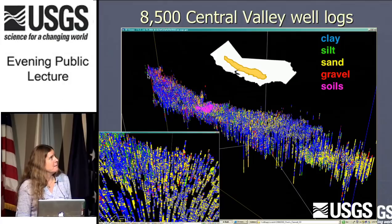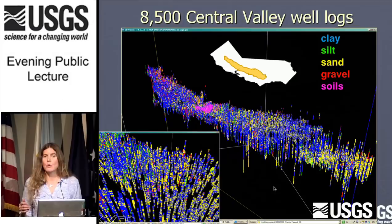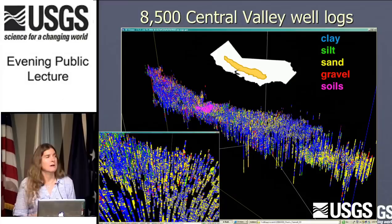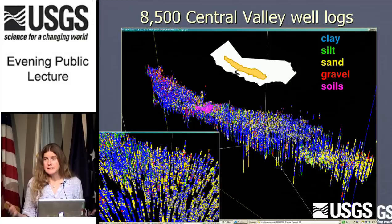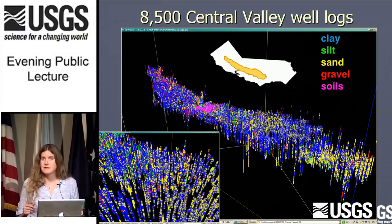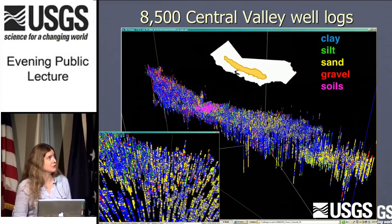Here's another way to look at that. My colleague Claudia Font put together the Central Valley hydrologic model, which simulates flow throughout the system. To do that well, you really need to understand the geology. So we digitized a bunch of well logs and hung them in space. Looking at this from Redding up here to Bakersfield down here, the take-home is that there's a lot of blue — which is clay.